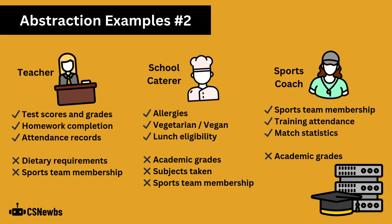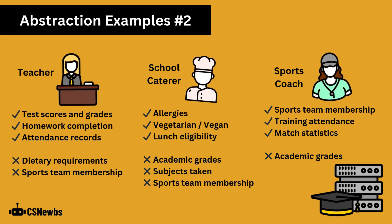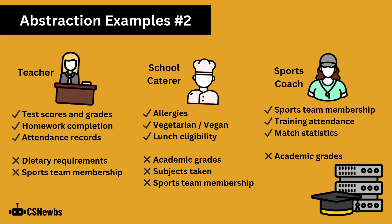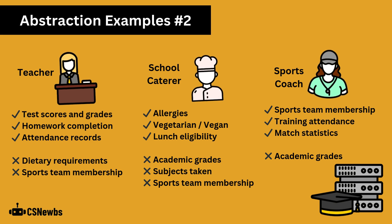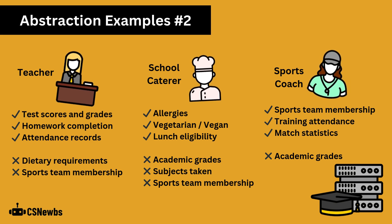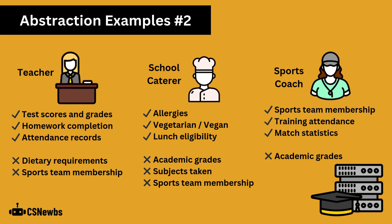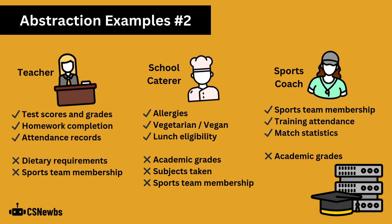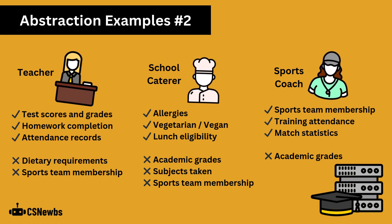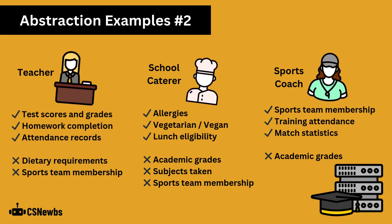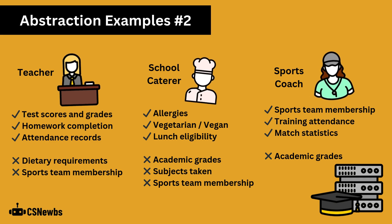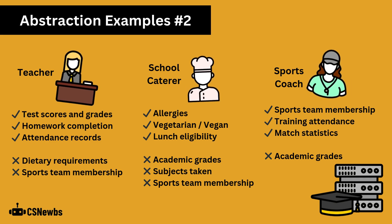An exam question may present a scenario and ask you to consider how abstraction can be used. Here is an example of how three different people can use abstraction with a school student database, showing the data each person will focus on and what they can ignore. For example, the teacher needs to know the test scores and grades of their students, but they don't need to know their dietary requirements.